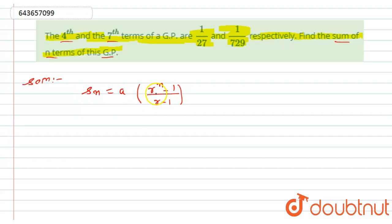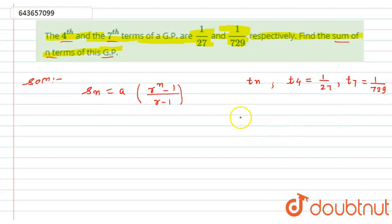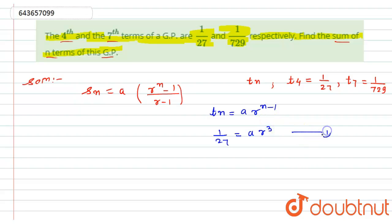As per the given information, we have the fourth term. In a GP, the nth term is denoted by Tn. So T4 = 1/27 and T7 = 1/729. The formula for the nth term of a GP is Tn = a·r^(n-1). Putting n = 4: T4 = 1/27 = a·r^3. Let this be equation number 1.